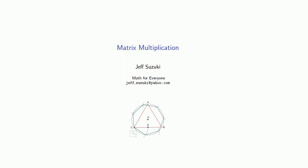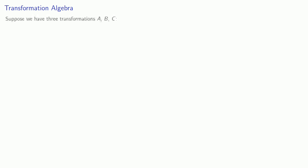Let's see if we can define the multiplication of two matrices. To do that, we'll go back to our transformation algebra. Suppose I have three transformations: a, b, and c.